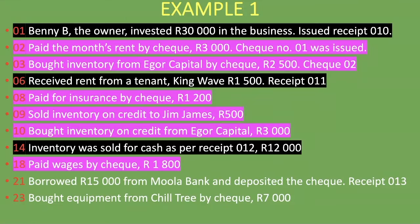On the 23rd: we bought equipment from Chill Tree by check, 7,000 rand. By now you should know — whenever you see 'bought something' or 'paid for something,' it doesn't go into the cash receipts journal. It goes into the cash payments journal. Similarly, anything bought or sold on credit does not go into the cash receipts journal. The cash receipts journal is only concerned with when you received money.